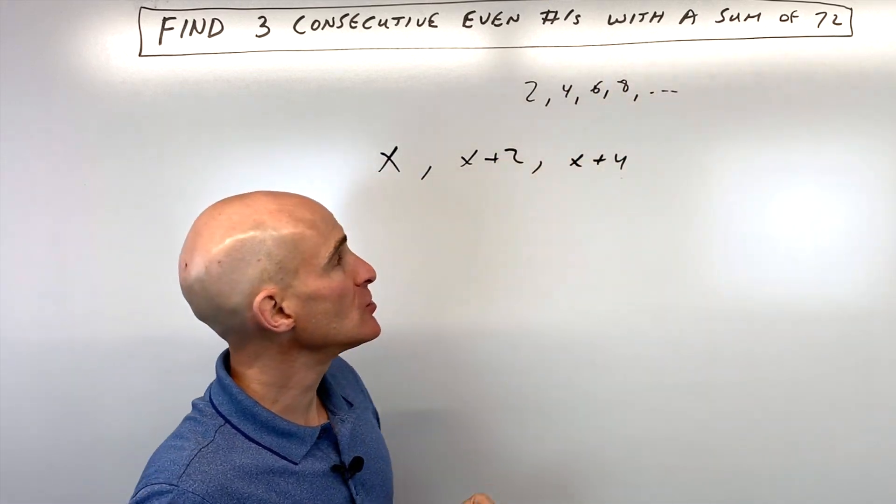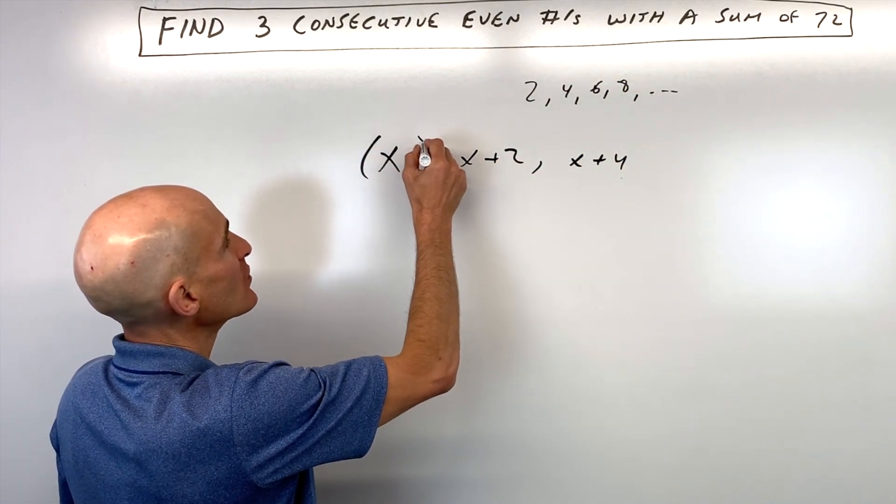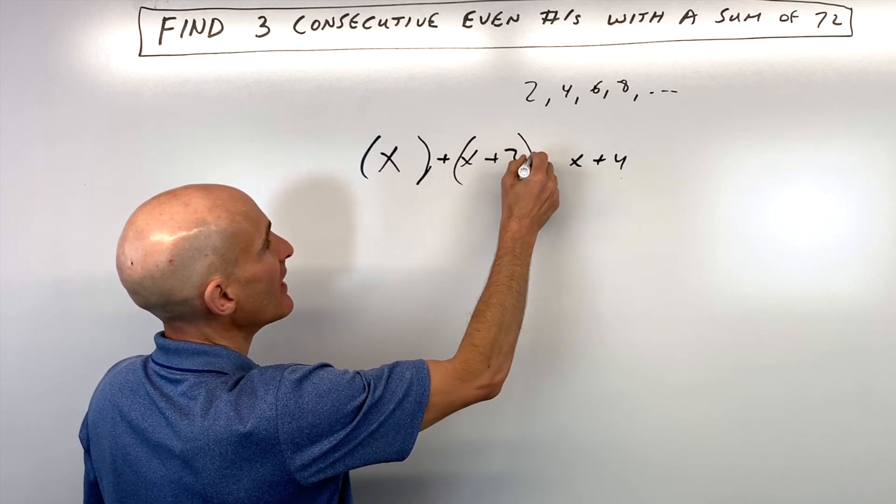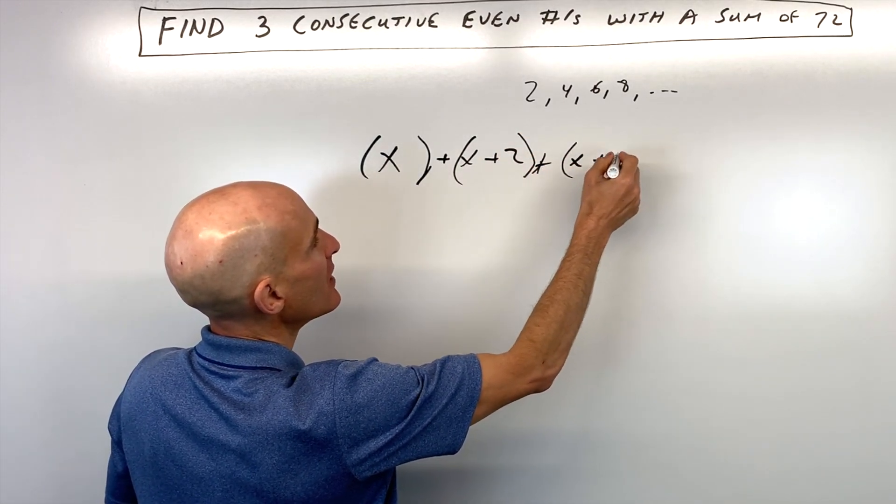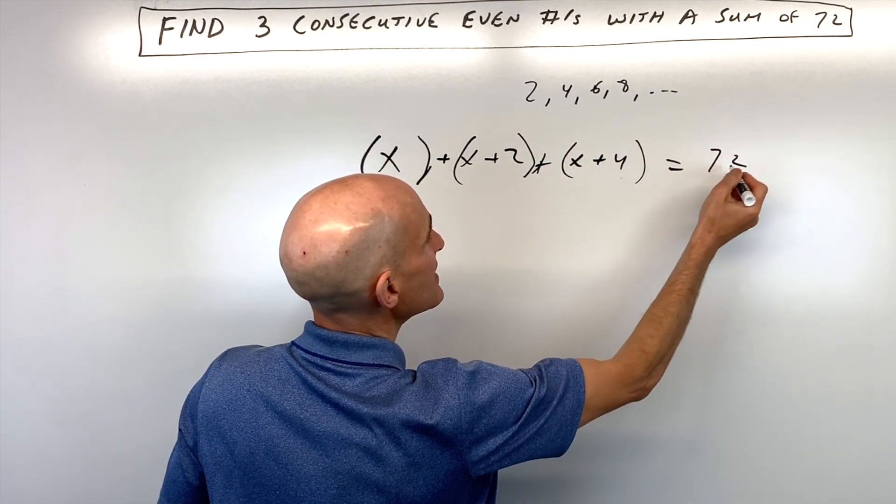So we can think of these as our three numbers, but now we're going to find the sum, and we know that the sum is 72. So sum just means add. So we have x plus x plus 2 plus x plus 4 equals 72.